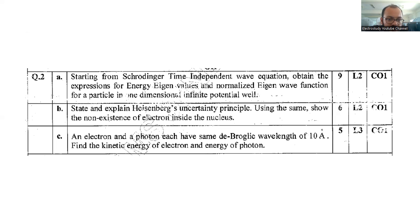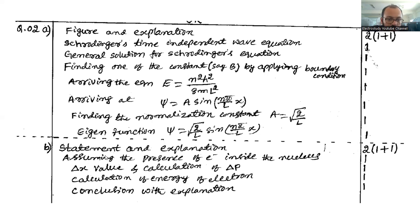State and explain the Heisenberg uncertainty principle. Using the same show the non-existence of electron inside the nucleus. I already explained in my previous videos regarding how to derive the Heisenberg uncertainty principle. Follow this particular sequence: statement and explanation two marks, assumption one mark, Δx value and calculation of Δp another one mark, calculation of energy of electron one mark.